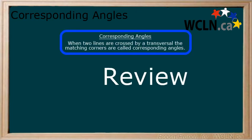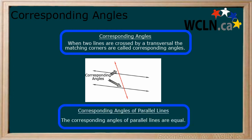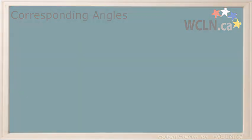In this lesson, you learned about corresponding angles, that when two lines are crossed by a transversal line, the matching angles are called corresponding angles. You also learned that if those two lines are parallel, the corresponding angles are equal.